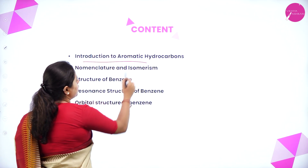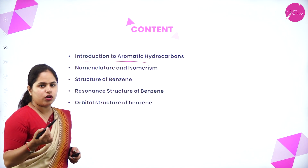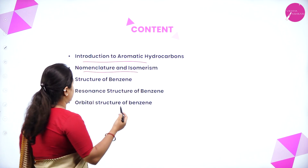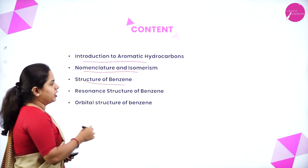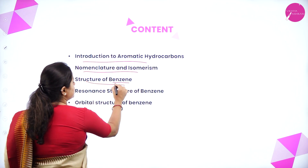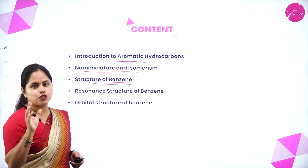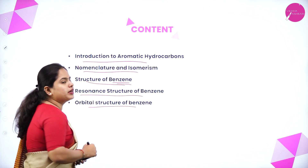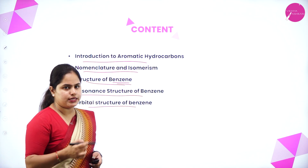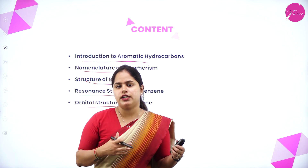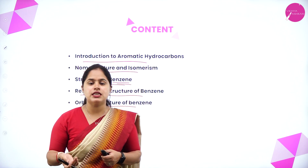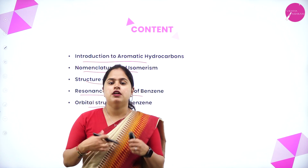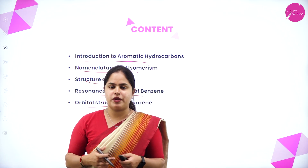Today we are going to study about what are aromatic hydrocarbons, the nomenclature and isomerism, the structure of benzene. Benzene is the most important compound here. We are going to study about benzene, the resonance structure of benzene, and the orbital structure of benzene. We are also going to discuss the methods of preparation, physical as well as chemical properties of benzene.